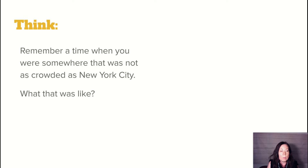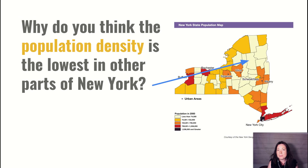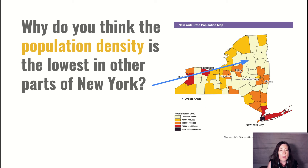Now think about a time when you were somewhere that was not as crowded as New York City. What was that like? Where were you? Let's think about why the population density is lowest in other parts of New York. Looking back at our map from the last video, we noticed that the light yellow areas represent the least amount of people — fewer than 74,000 people. Why is the population density so low in those areas?